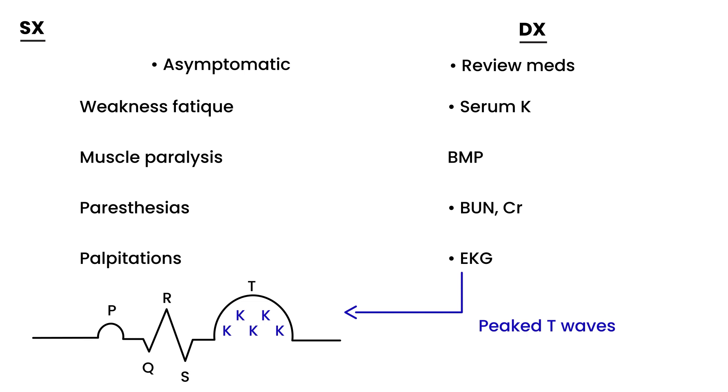One other part of the diagnosis I definitely need to mention is you need to review the patient's medications, because certain medications can raise the person's potassium. One of the most common is potassium-sparing diuretics. Certain drugs like spironolactone, amiloride, or triamterene can make a person's potassium level rise.